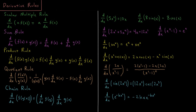The sum rule: whenever we want to take the derivative of a sum of two functions f(x) plus g(x), that is just the derivative of f(x) plus the derivative of g(x). These two rules combined show that a derivative is what you would call a linear operator, as you will eventually see in quantum mechanics.